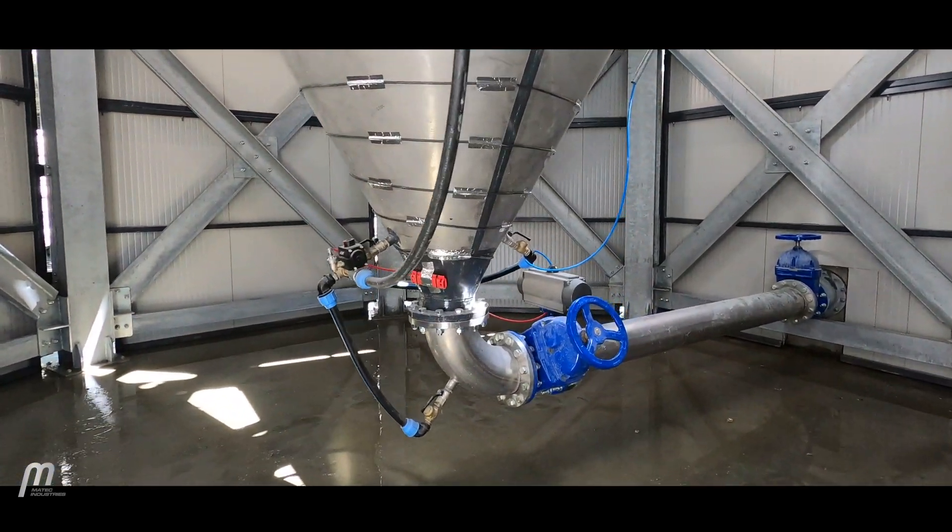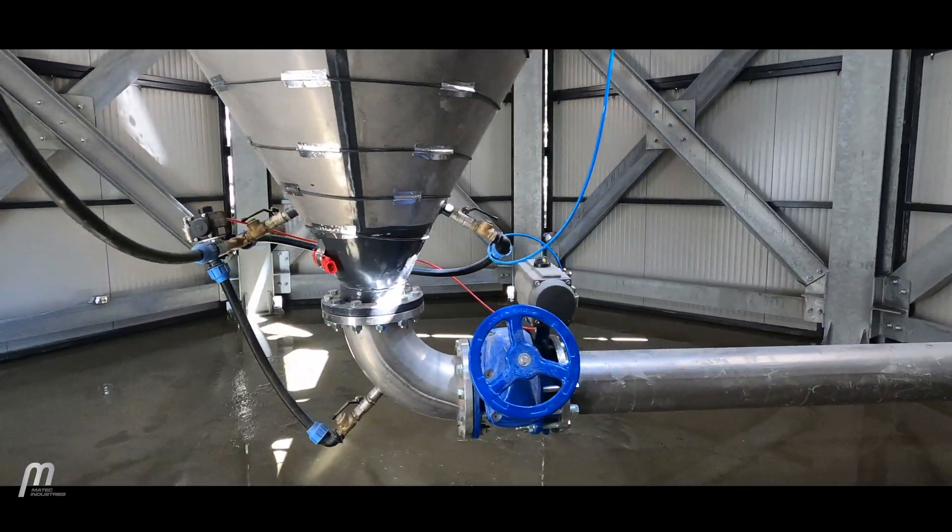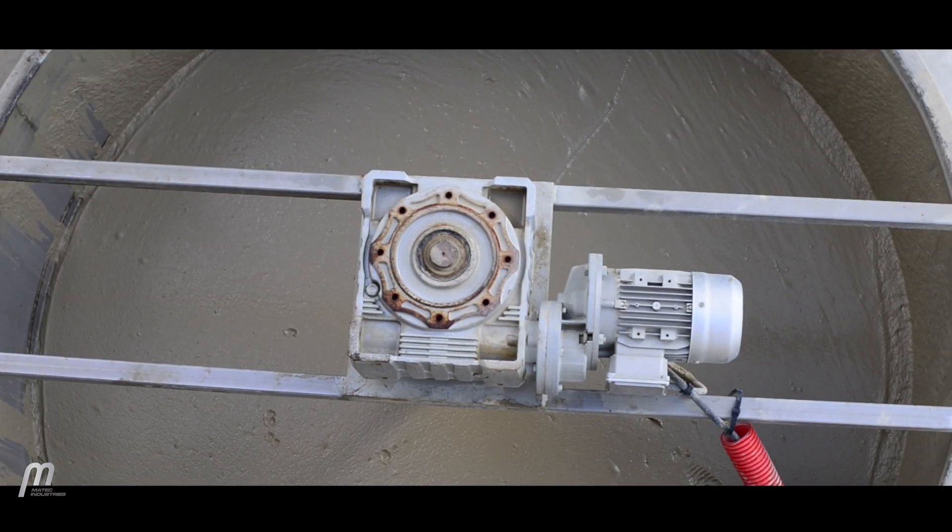The decanted and thickened sludge is discharged from the base of the thickener to the homogeniser tank.